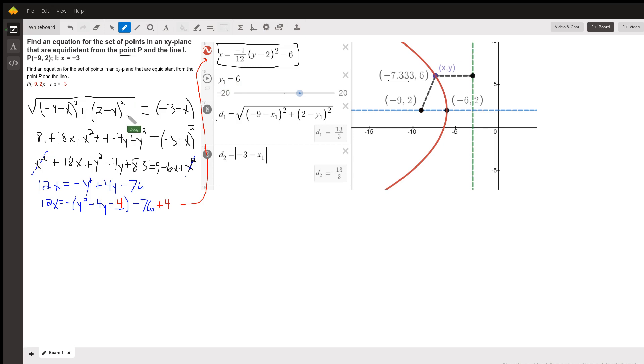I squared both sides, which removed this radical. And in the same step, I squared each of these binomials. So -9 minus x to quantity squared is this right here. 2 minus y of the quantity squared is this. And I'm going to square the quantity -3 minus x on the next line. There it is. 9 plus 6x plus x squared. Notice there's an x squared on both sides of the equal sign. I can cancel those out.